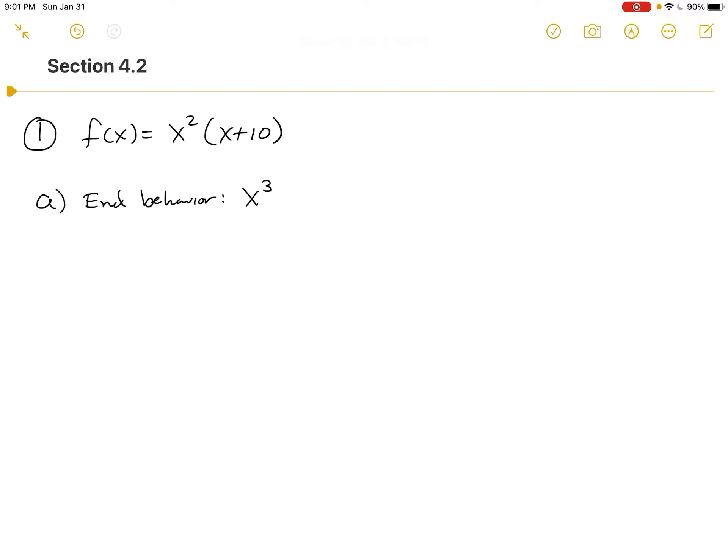So again, what does that mean? It means that if you're looking at the graph of a function, it doesn't have to be perfectly x cubed, but it's behaving like x cubed, meaning it's going to be down on the left and up on the right. That's how it's going to look. You actually know where it starts and you know where it's going to end.